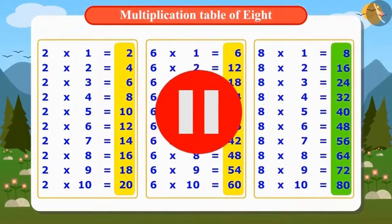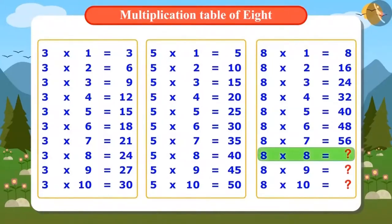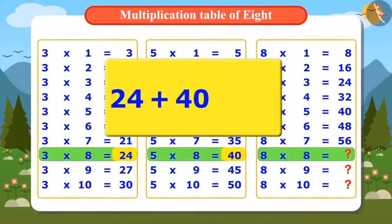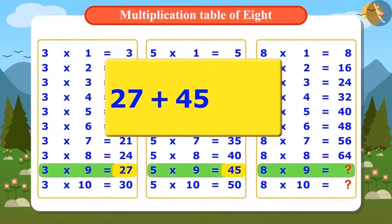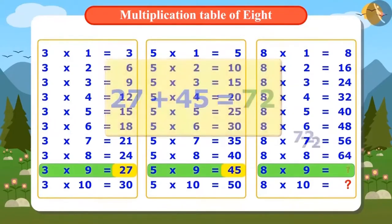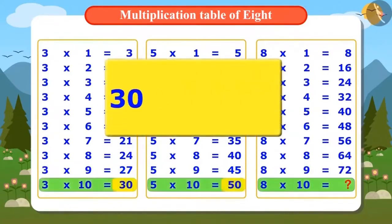Pause the video and write down the full table of 8. Vandana has calculated till 7×8. Let's see how she will find out 8×8. To find 8×8, we have to add the numbers 8×3 and 8×5. When we add 24 and 40, we get 64. To find the answer of 9×8, we add 27 and 45. The answer will be 72. To find the last number, we will add 30 and 50. The answer will be 80.